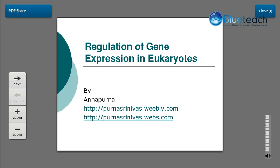In this session, I'll be discussing regulation of gene expression in eukaryotes. Eukaryotic organisms have a well-defined nucleus and a complex genome, as a result of which the synthesis of protein has to be regulated in a very controlled manner. Within multicellular organisms, different cells perform different functions, which is also known as differentiation of cells, and depending upon their function, their requirement of proteins is also different.